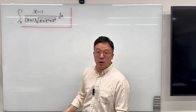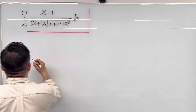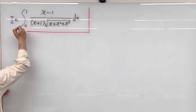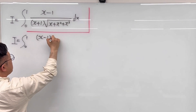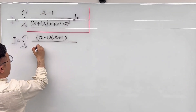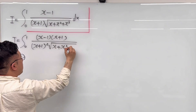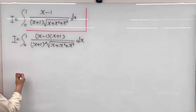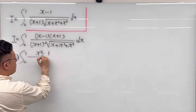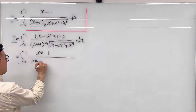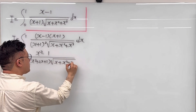We'll be making this integral in a form where we can use arctangent at the end. So let me multiply (x plus 1) to both the numerator and denominator. So now, calling this integral I, we have I equal to the integral from 0 to 1 of (x minus 1)(x plus 1) over (x plus 1) squared times the square root of x plus x squared plus x cubed, dx. This simplifies to the integral from 0 to 1 of (x squared minus 1) times (x plus x squared) over (x squared plus 2x plus 1) times the square root of x plus x squared plus x cubed, dx.